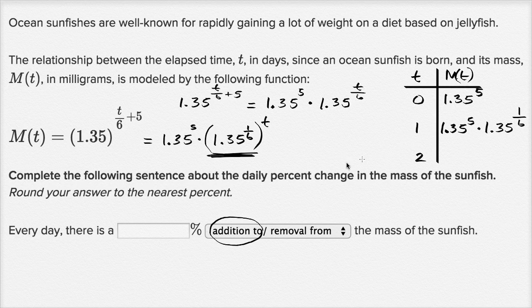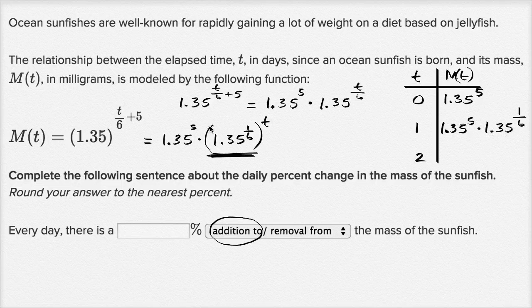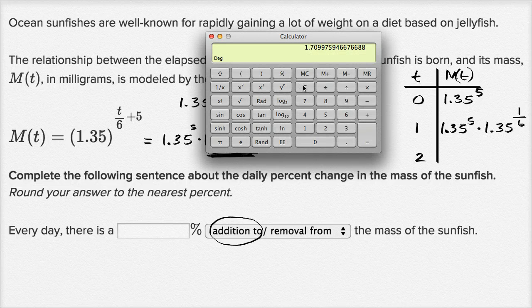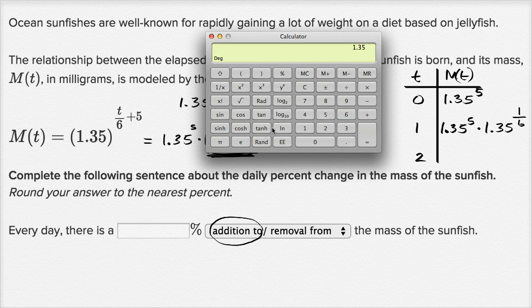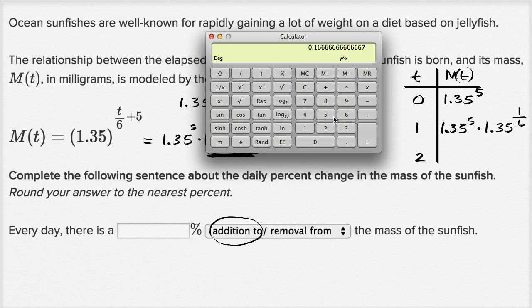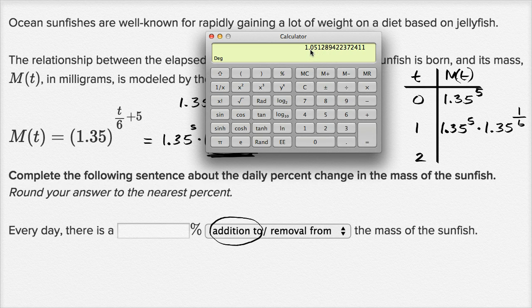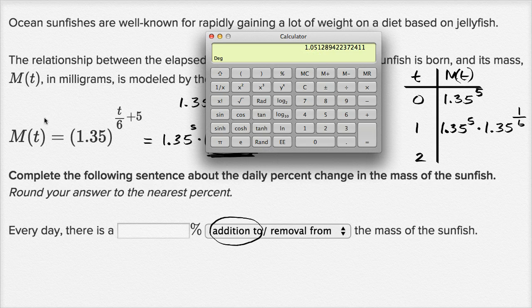And so every day we are growing by our common ratio, 1.35 to the one sixth power. Let me get a calculator out. We're allowed to use calculators in this exercise. So 1.35 to the one divided by six power is equal to 1.051 approximately.